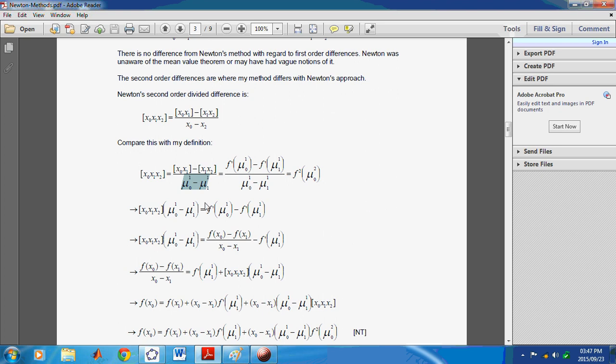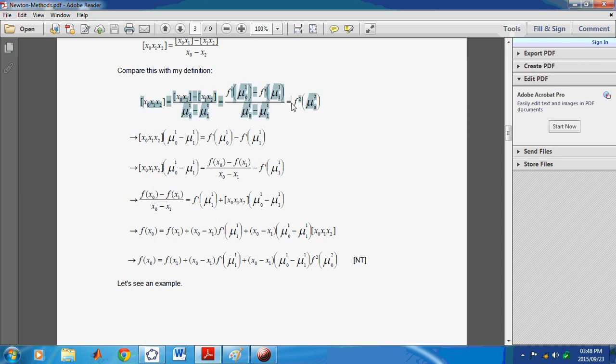Typically, this would have been x subscript 0 minus x subscript 2. But what you have here is the first order mean subtracted from each other to arrive at the second derivative with this abscissa here as an argument. In other words, mu subscript 0 superscript 2 is the argument for this particular derivative. And we can derive the new polynomial using this identity here to eventually arrive at what you see there, which is the Gabriel polynomial.